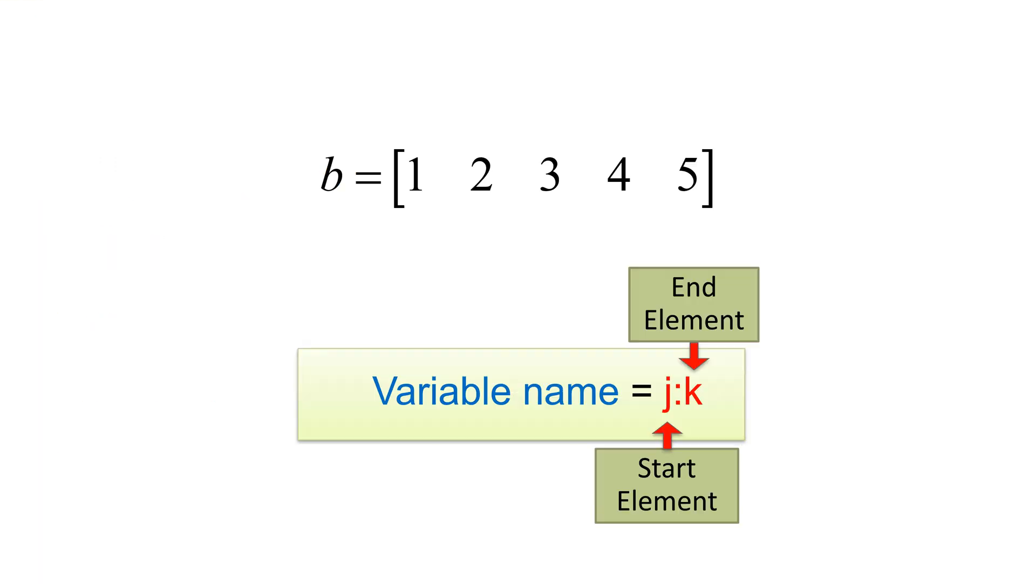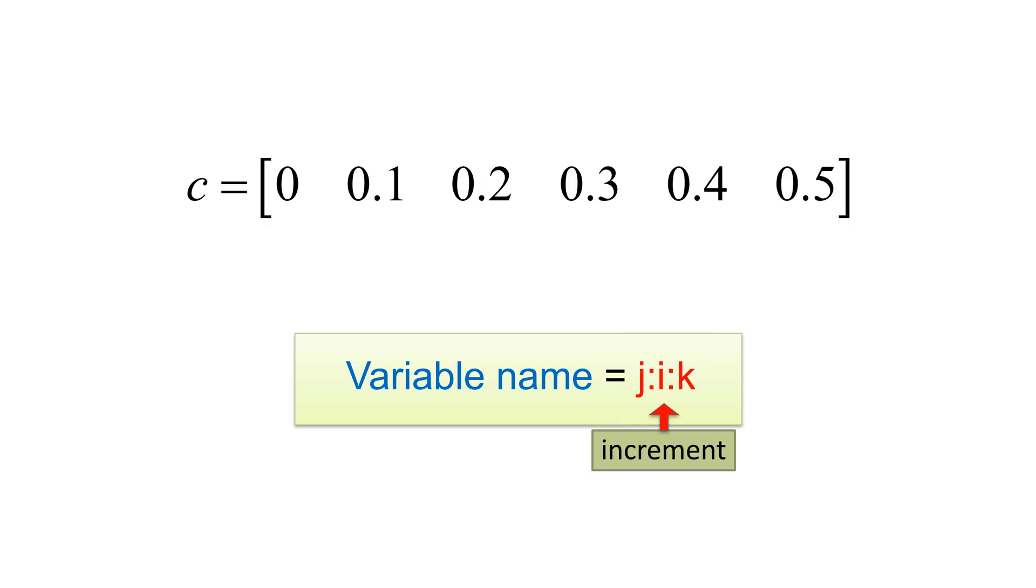The syntax J colon K generates a row vector having the first element J to K having increment of 1. This approach works best if the elements are considered as a series having increment of 1. The colon operator is very important in MATLAB and we will reuse it for various application later. So please keep this in mind. What about creating a 1 by 6 row vector C having 0 to 0.5 with increment of 0.1? You can still use square brackets. However, since the series has an increment of 0.1 rather than 1, you need to specify it. The secret is to specify the increment between columns. The syntax J colon I colon K gives a row vector having the first element J to K with increment of I.